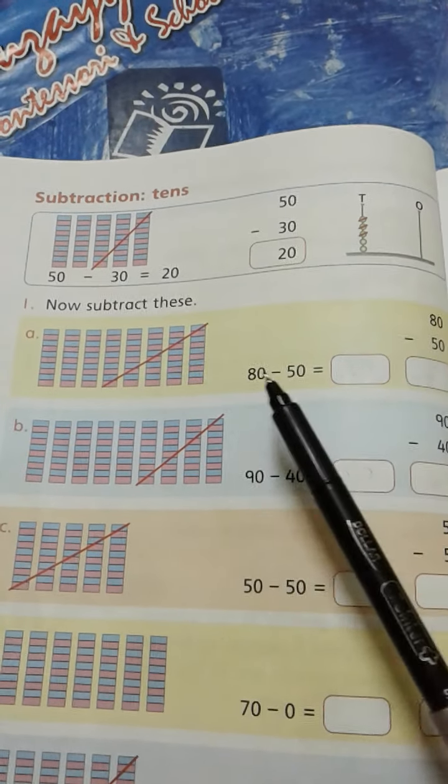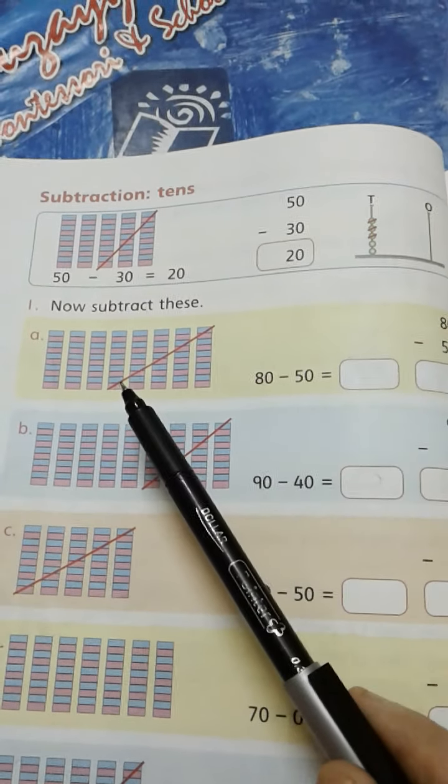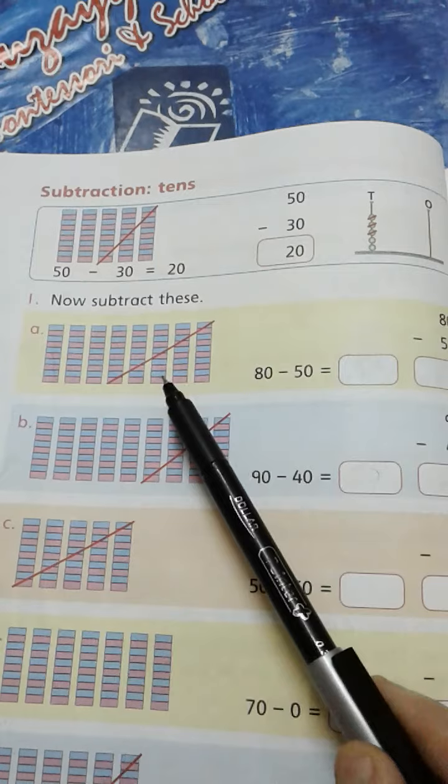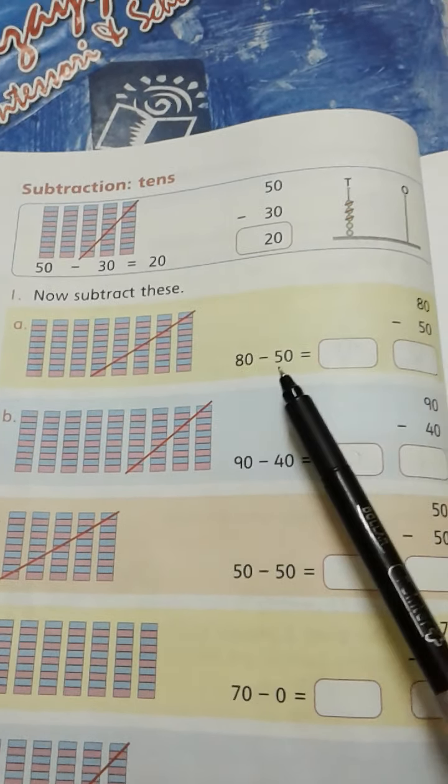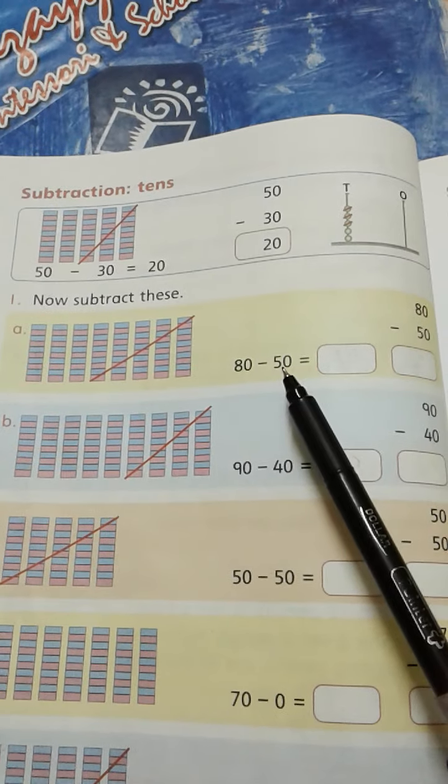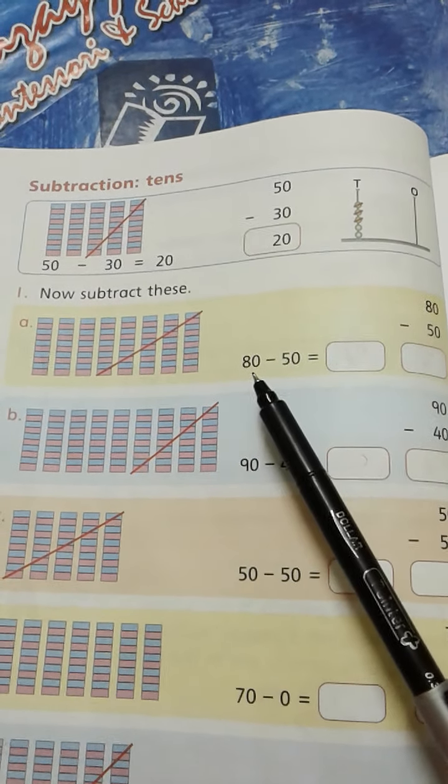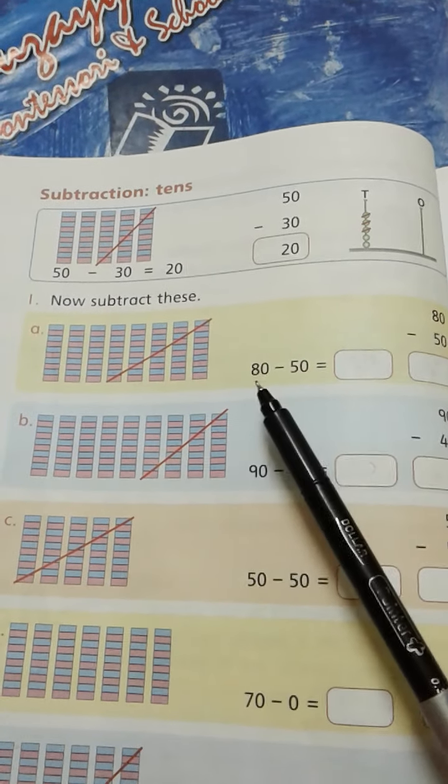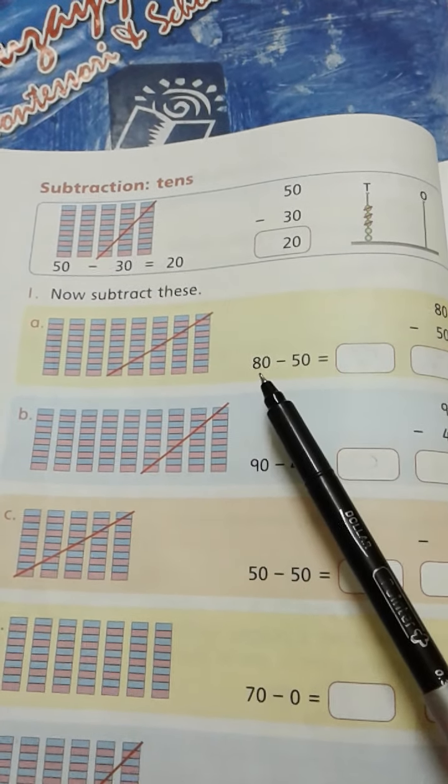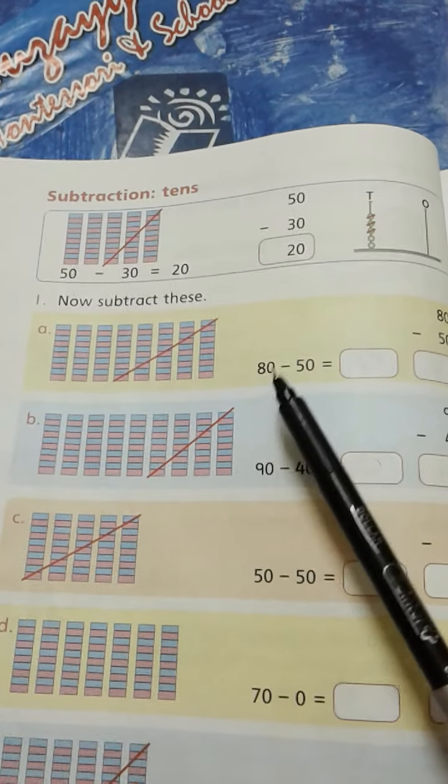Now we will subtract how many tens? Let's count again: 1, 2, 3, 4, 5. 5 tens means we have to subtract 50 from 80.